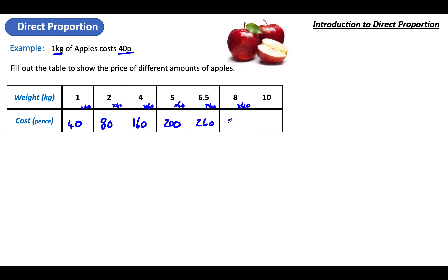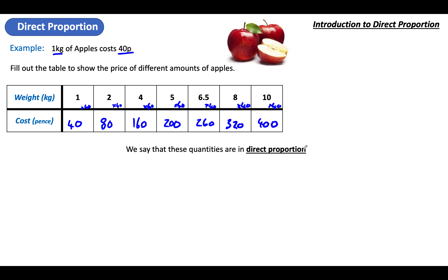Eight lots of 40 — basically all we need to do is multiply by 40. What we end up with is two variables: weight and cost. They're linked, and in this case we say these quantities are in direct proportion. That's because there's the same multiplier taking us from weight to cost — the cost is always 40 times the weight. That's why they're in direct proportion: the same multiplier takes us from one variable to the next.